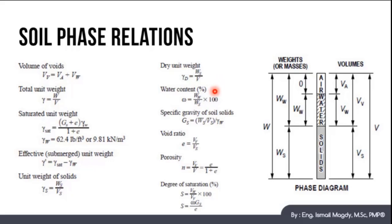Water content percentage equals Ww over Ws all multiplied by 100. And the porosity N equals Vv over V or equals E over 1 plus E. And finally the degree of saturation S equals Vw over Vv all multiplied by 100, or it equals the water content multiplied by Gs which is the specific gravity all divided by E.